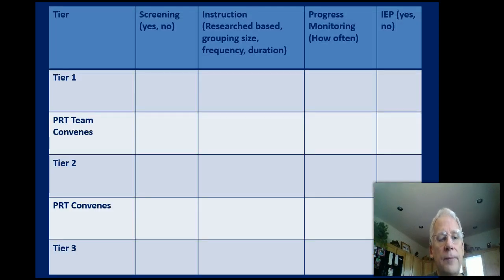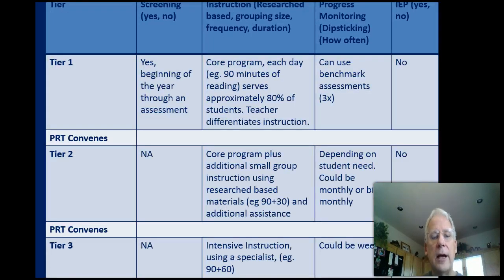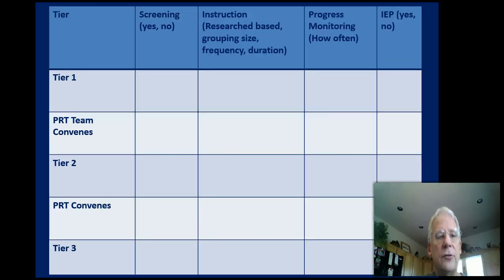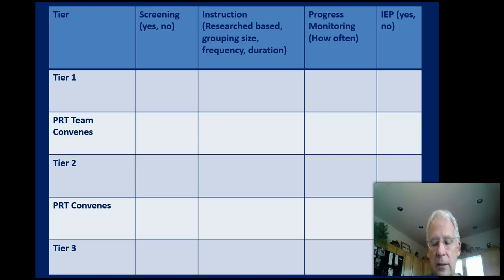There's a blank chart where, if you look at the tiers across the top — whether or not screening is involved, the focus of instruction, the progress monitoring frequency, and whether an IEP is involved — you can try to fill that in on your own. On the next slide, you can see how it would be filled in. We know that Tier 1 has screening three or four times a year and a pre-referral team may meet if someone has trouble. Screening is not involved in Tier 2, but progress monitoring is involved in Tier 2.